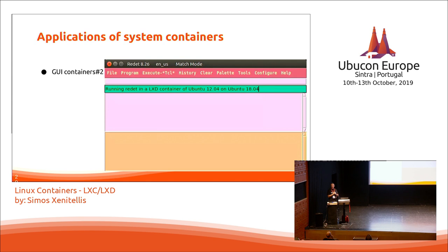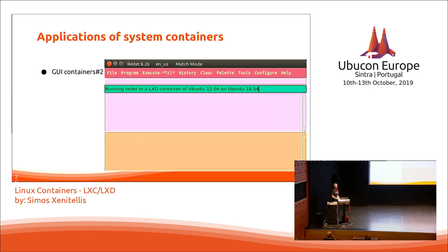You can have container images with older versions of Ubuntu, including Ubuntu 12.04. On one hand you have old containers, and on the other you have GUI containers. Here is an example of very old software called Reddet, based on Tcl, which does not have packages for newer versions of Ubuntu — the latest that works is 12.04. By using LXD, you can get this running with Ubuntu 18.04 as the host and Ubuntu 12.04 as the container.